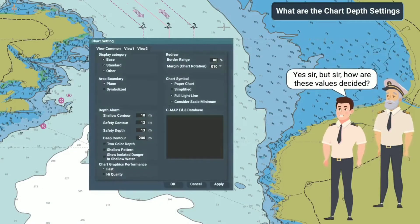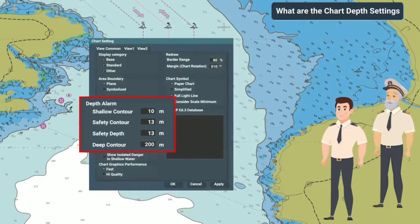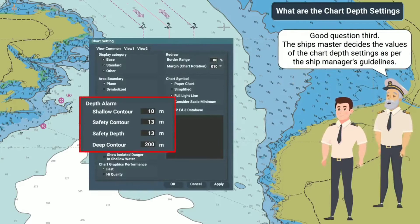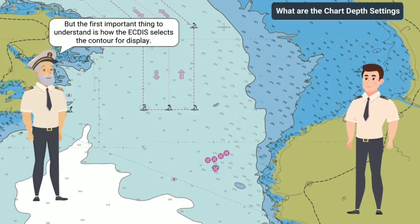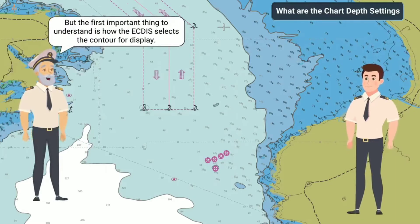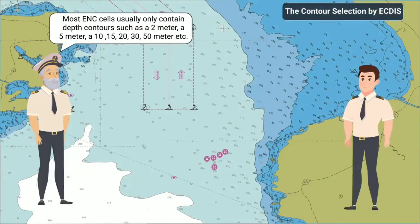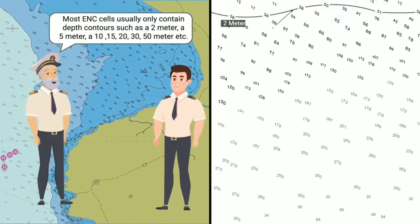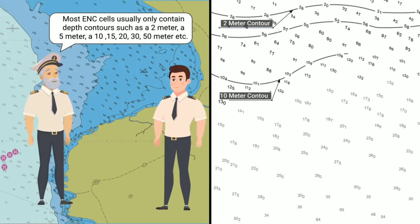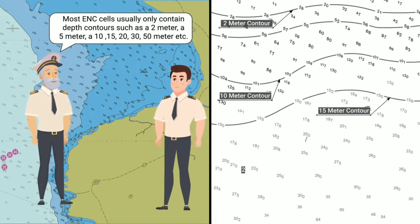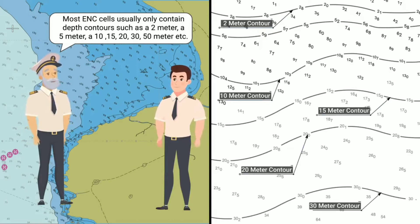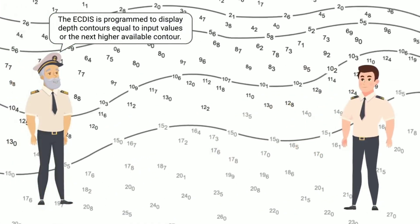But sir, how are these values decided? Good question. The ship's master decides the values of the chart depth settings as per the ship manager's guidelines. The first important thing to understand is how the ECDIS selects the contour for display. Most ENC cells usually only contain depth contours such as 2 meters, 5 meters, 10, 15, 20, 30, 50 meters, etc. The ECDIS is programmed to display depth contours equal to input values or the next higher available contour.